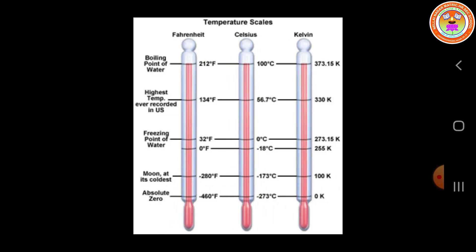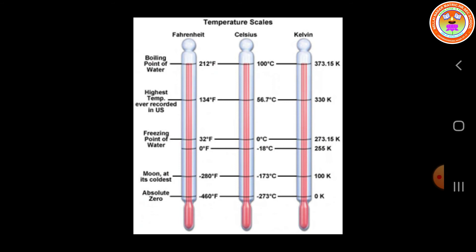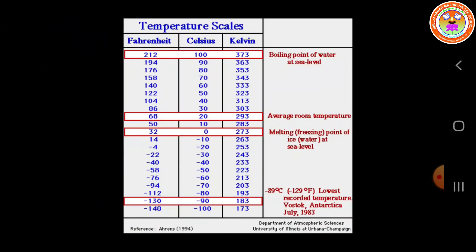Here we can compare the three different scales by their starting and end readings. First one is Fahrenheit scale, second one is Celsius scale, and third one is Kelvin scale. We can compare the three different readings — Fahrenheit in terms of Celsius, and Celsius in terms of Kelvin. Whatever values we have in degree Celsius, the same value can be converted into Fahrenheit as well as Kelvin with the help of a formula.